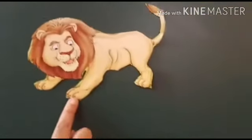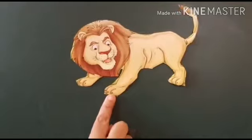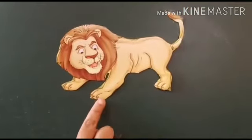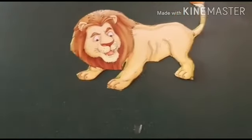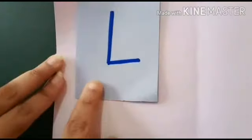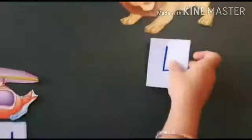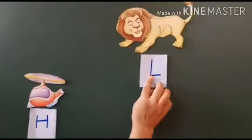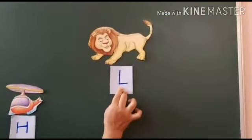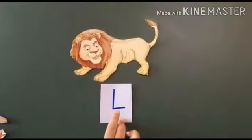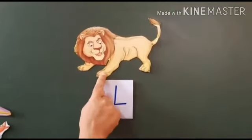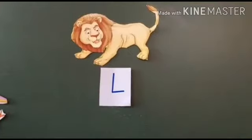Now tell me which picture is this. Who will tell me? Lion. And lion starts from which letter? Come on, tell me fast. Letter L. So we will take out letter L. And what's the sound of letter L? L says L, L says L, L, lion, L, lion.